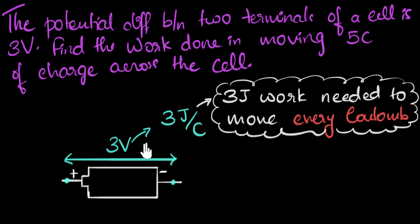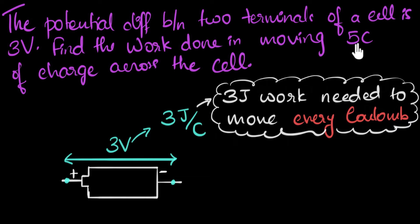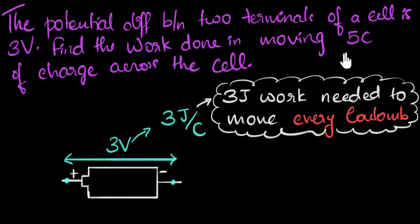Now that we know the meaning of potential difference, let's see if we can answer the question. We need to calculate work done in moving five coulombs of charge. What we already know is that to move one coulomb, we need to do three joules of work. To move five coulombs — how much work do we need? That is the question.